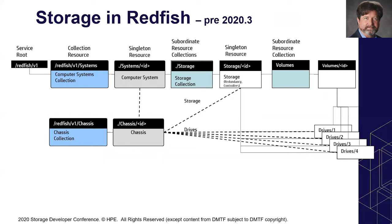Under a computer system and chassis, drives can be placed under a chassis or under a storage controller — flexibility for implementers. There is typically a storage element under a computer system as a storage collection, since you may have one or more storage subsystems. That subsystem contains controller information and redundancy information. Volumes are in a volume collection directly off the storage. Drives are typically in the chassis, which allows you to convey power, cooling domain, and temperature alert relationships.